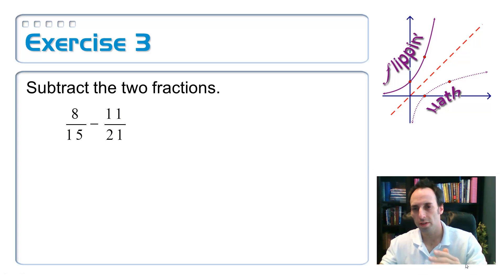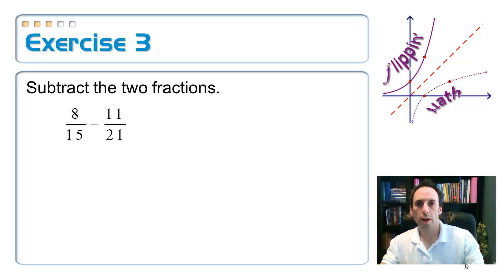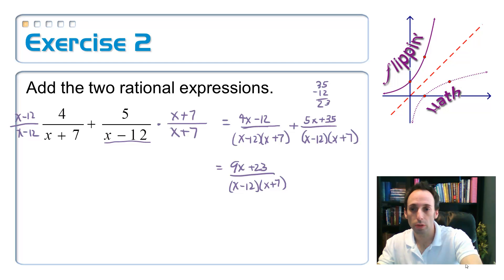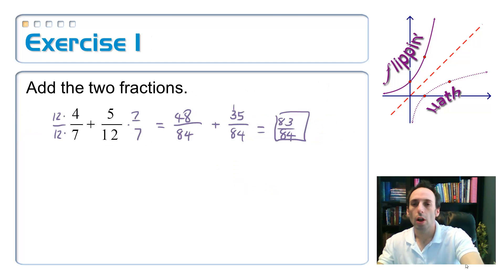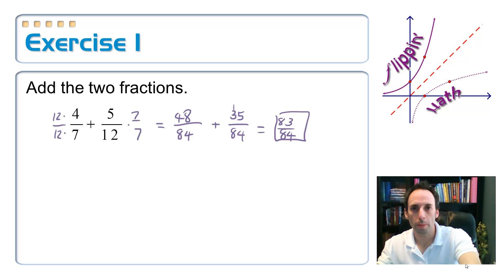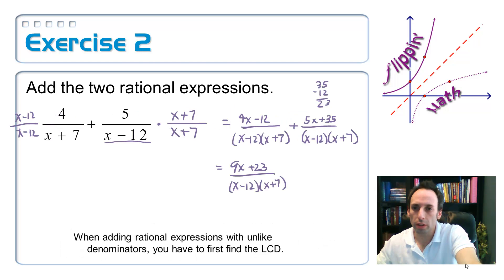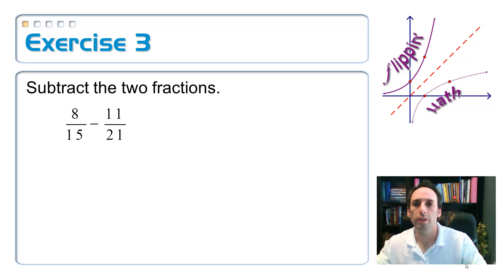We're about to subtract these two fractions, and before you subtract fractions — just like when we add them — you have to have a common denominator. One of the ways to get a common denominator is just to multiply the two denominators together. It may not give you the least common denominator, but it will give you a common denominator and that will still work. The only thing is that sometimes you'll have to simplify more at the end.